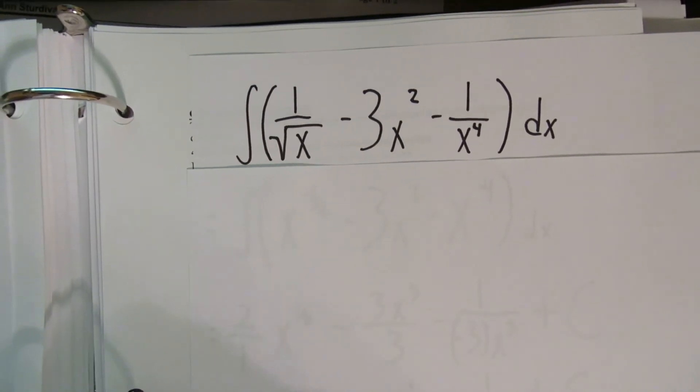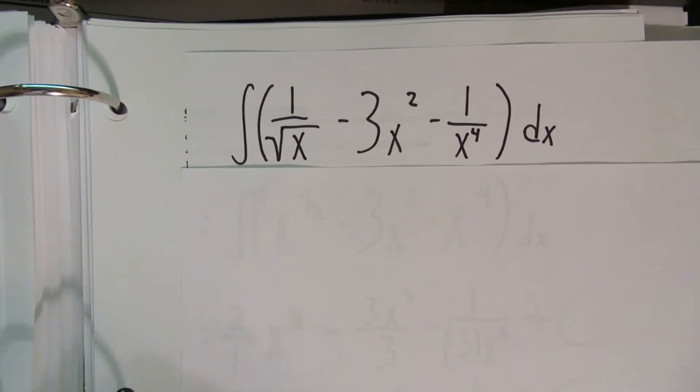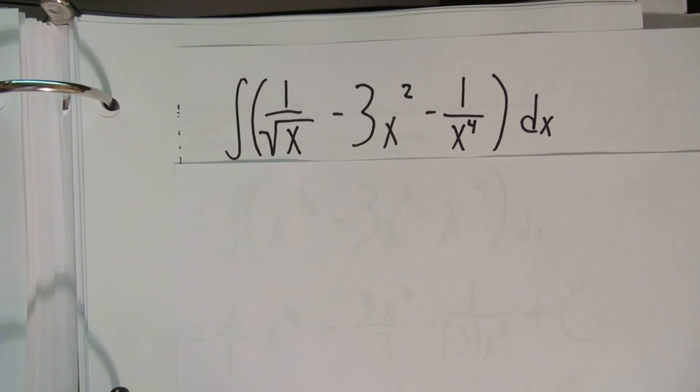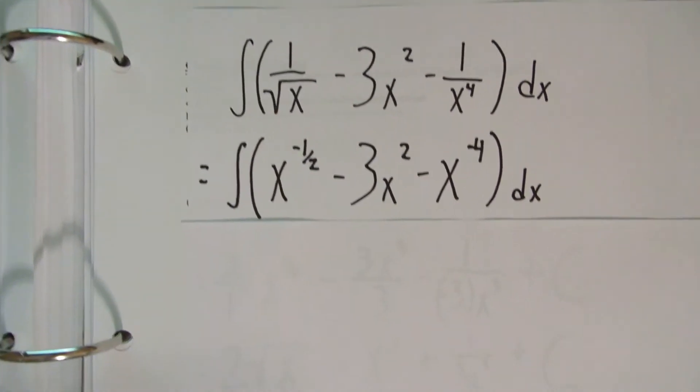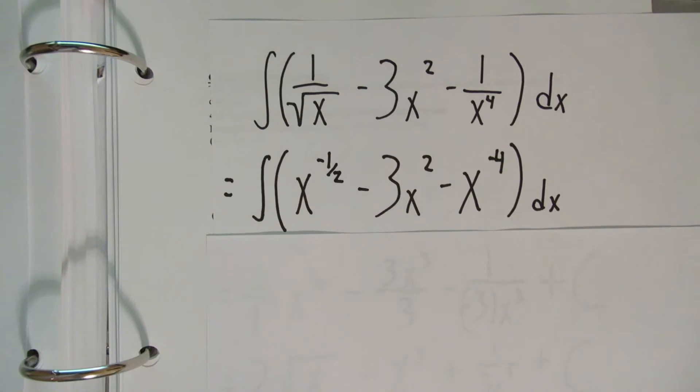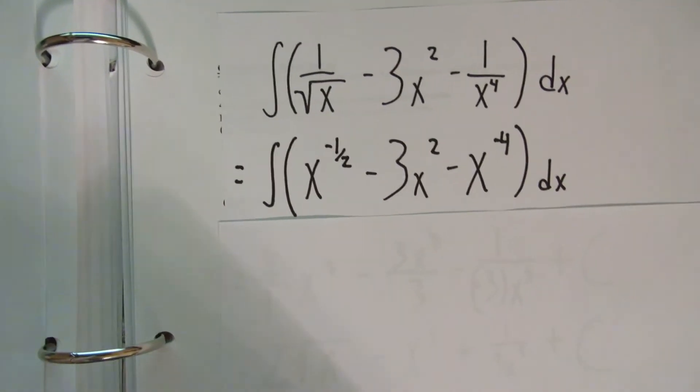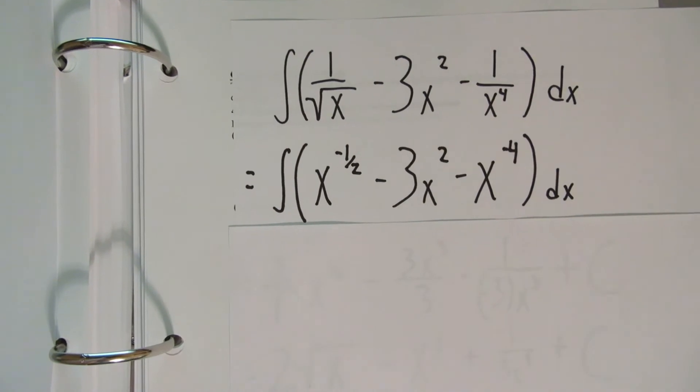The first step in doing this would be to rewrite this into an easier form to work with, which would be x to the negative one-half minus 3x squared minus x to the negative fourth. This is much easier to work with, since we are just raising the power and then dividing by the power that we have raised it to.